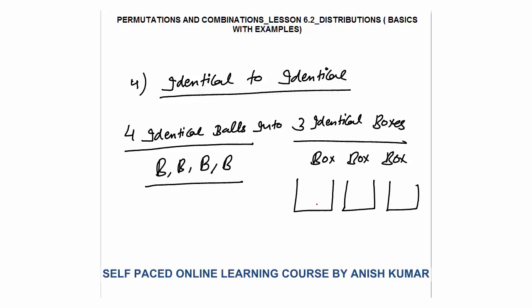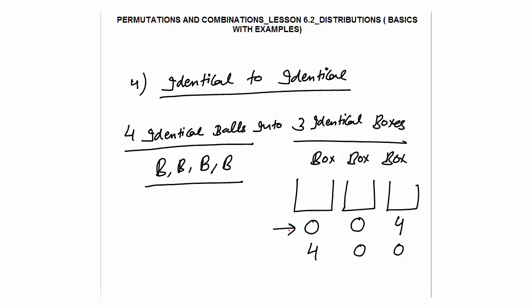Because balls are identical, one distribution could be 0, 0, 4 — meaning 2 boxes are empty and 1 box has 4 balls. Now very importantly, 0, 4, 0 or 4, 0, 0 is the same thing, because boxes are not different — they are identical. So 0, 0, 4 counts as just 1 distribution.